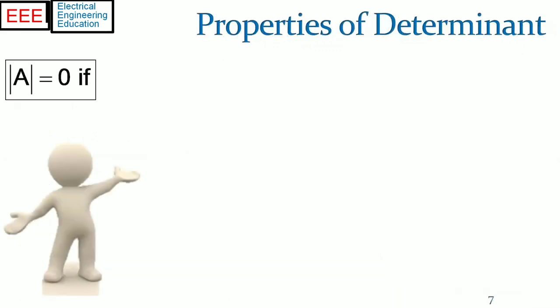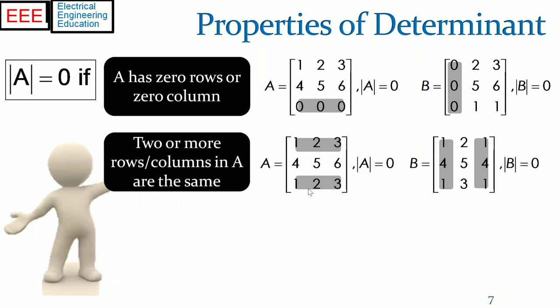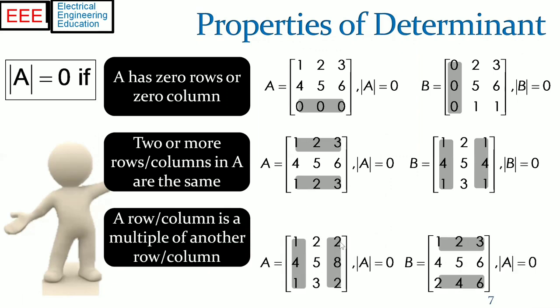Some important properties are very useful to find the determinant of a matrix. The determinant of a matrix A is zero, firstly, if A has zero row or column; secondly, if matrix A has two or more similar rows or columns; and finally, if a row or column is a multiple of another row or column.